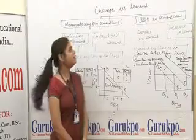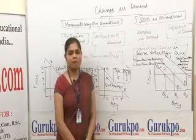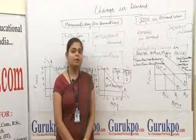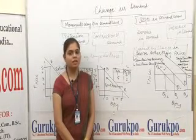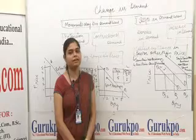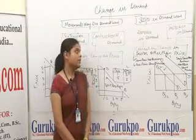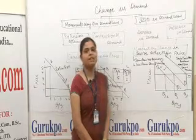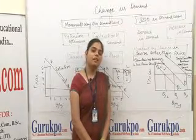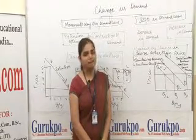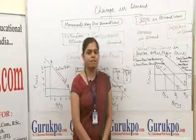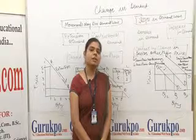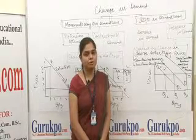The second part of change in demand is shift in demand curve. In a shift in demand curve, our demand curve totally shifts from the original demand curve — it may be downward or upward. There are two parts: decrease in demand curve and increase in demand curve. Shift in demand curve occurs due to change in other factors such as change in income of the consumer, substitute goods, complementary goods, and change in number of consumers.